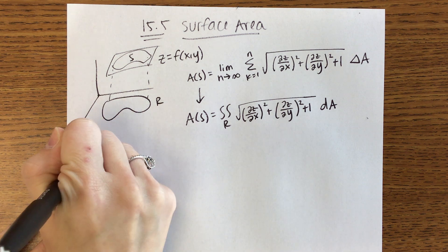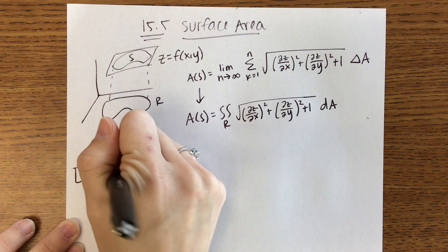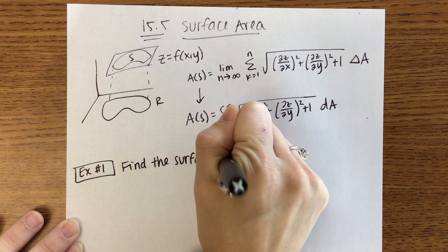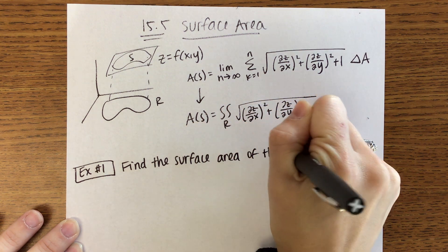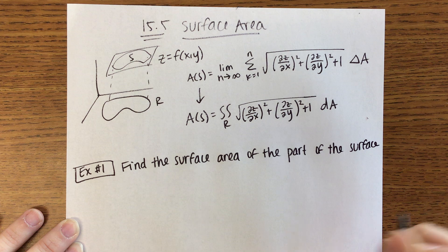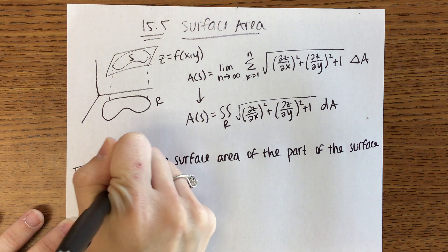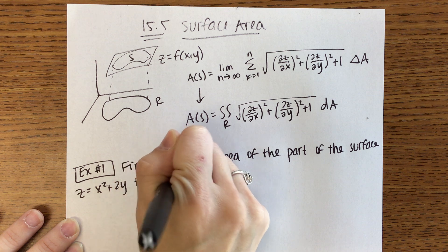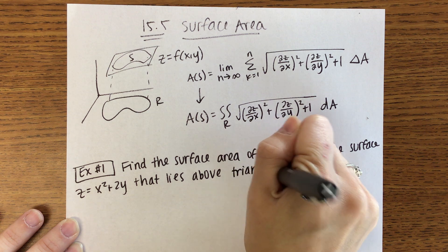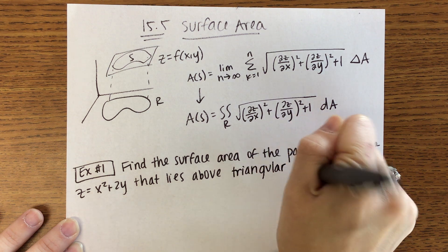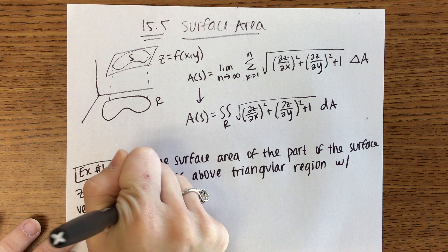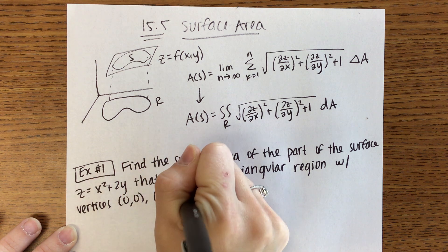So here's our first example. We are going to find the surface area of the part of the surface Z equals X squared plus 2Y that lies above the triangular region with vertices (0,0), (1,0), and (1,1).